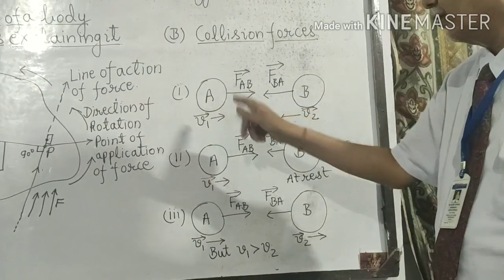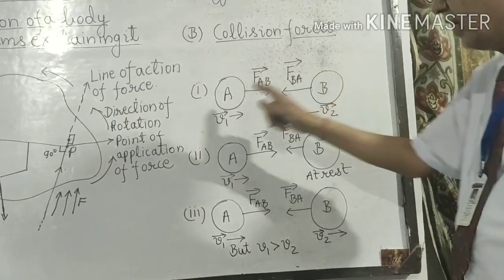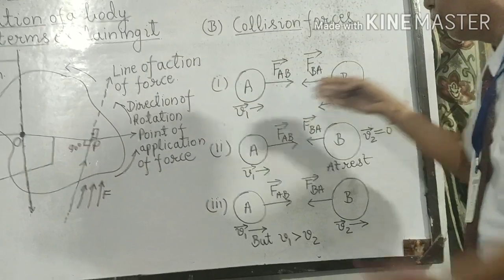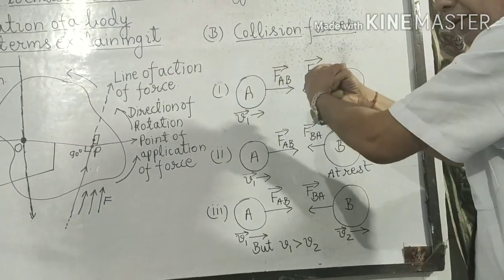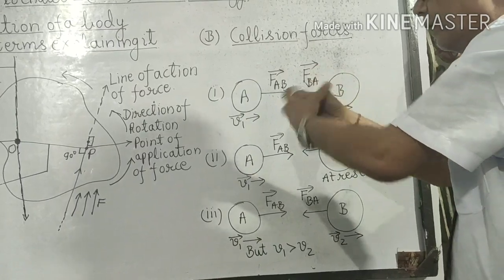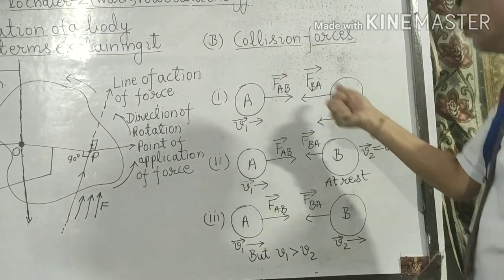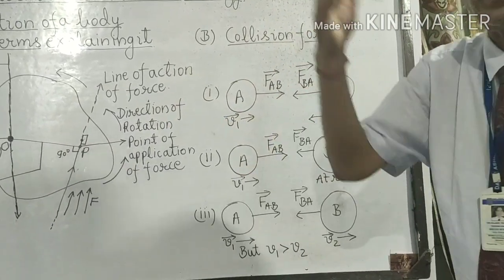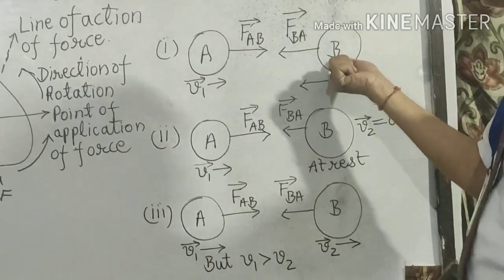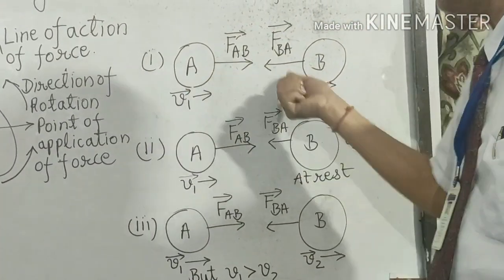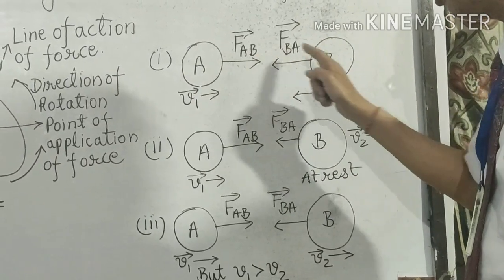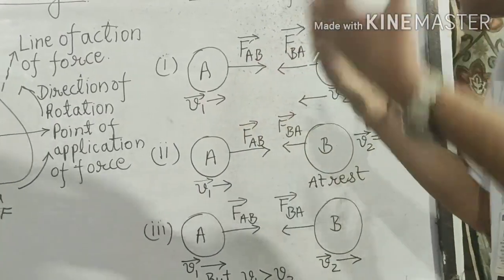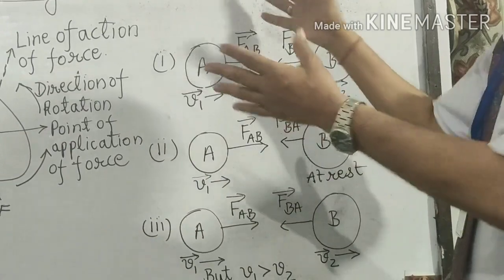This is the first case. These are two bodies A and B. A is moving with velocity V1 towards B, and B is moving with velocity V2 towards A. Naturally they will collide. And at the time of collision, A will apply force on B — which is called force FAB. Both these two forces are opposite in direction. These two forces appear in pair and are called collision forces.